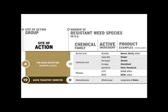Currently 10 different weed species are resistant to these sites of action. These sites of action contain 4 different chemical families, a number of active ingredients, and a larger number of products that correspond to those active ingredients. The take home from this chart is if you can be spraying any of these products, you're actually only spraying from these 2 sites of action or 1 mode of action, which in theory can increase the chances of developing herbicide resistant weeds.